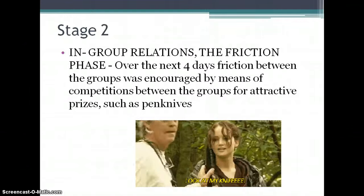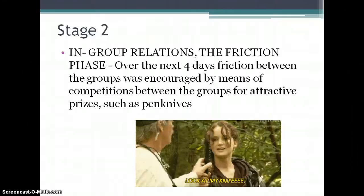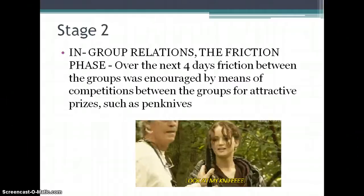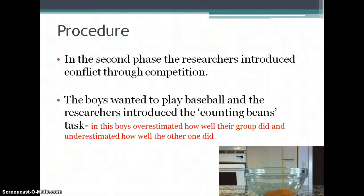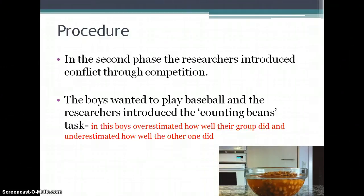In stage two, the researchers looked at relationships between the two groups. Over the next four days, friction was encouraged through competition — the boys competed for prizes like knives. The boys immediately wanted to compete as soon as they knew they could mix. Researchers also introduced a bean-counting task, where boys had to estimate how many beans were in a tub and then rate how well their group and the out-group had done. The result was that boys overestimated how well their own group did and underestimated how well the other group did.